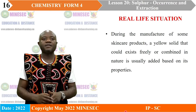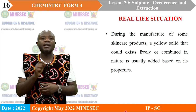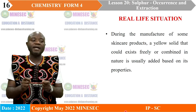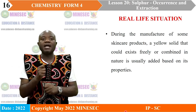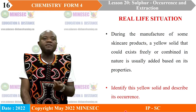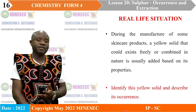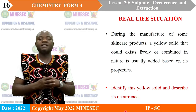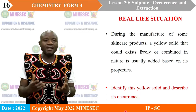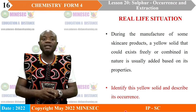Real-life situation: During the manufacture of some skin care products, a yellow solid that could exist freely or combined in nature is usually added because of its properties. Identify this yellow solid and describe its occurrence. Before this lesson comes to an end, we are going to revisit this real-life situation to identify the solid and describe where we can actually find it in nature.